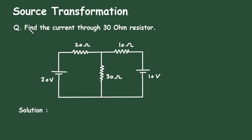Source transformation. Question: Find the current through the 30 ohm resistor. In this circuit we have to find the current through the 30 ohm by using the source transformation technique.